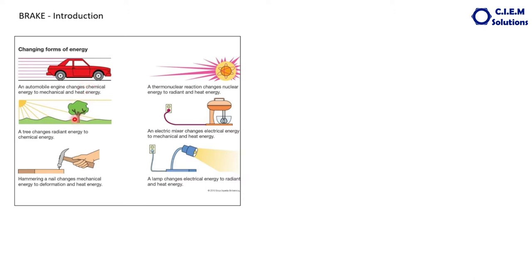Looking at more examples: a tree absorbs sunlight (radiant energy) and transforms it into chemical energy through photosynthesis. When you hammer a nail into wood, mechanical energy is transformed into heat energy. A thermonuclear reaction changes nuclear energy into radiant or heat energy. In a mixer, electrical energy is converted into mechanical energy or heat energy. A lamp changes electrical energy into radiant energy — that is light. That's how energy changes from one state to another depending on nature's or our requirement.